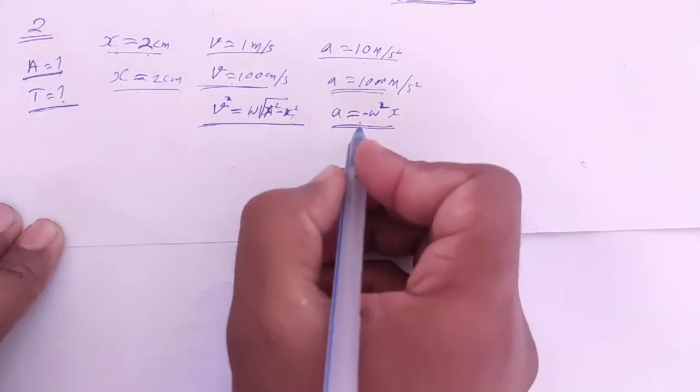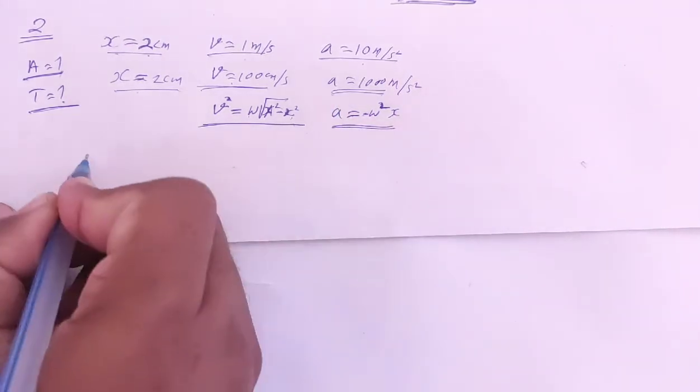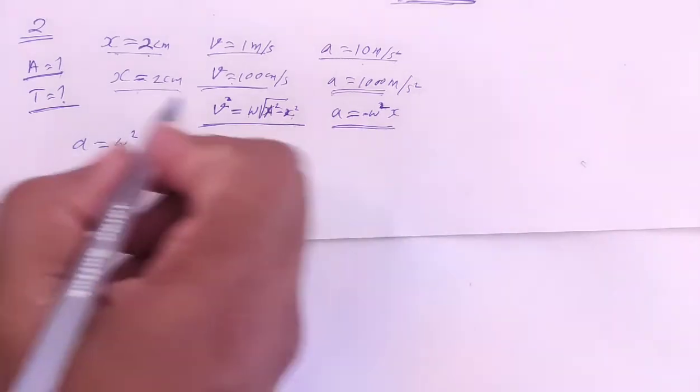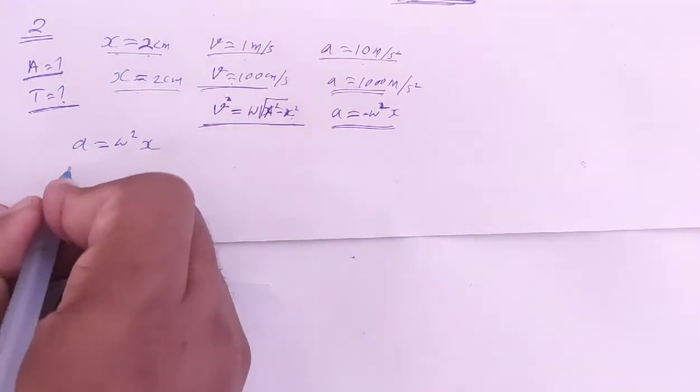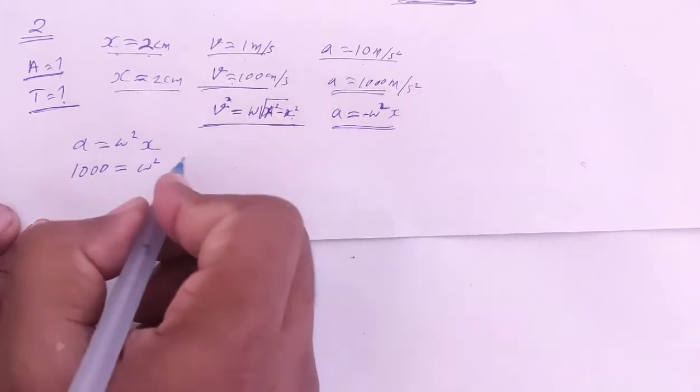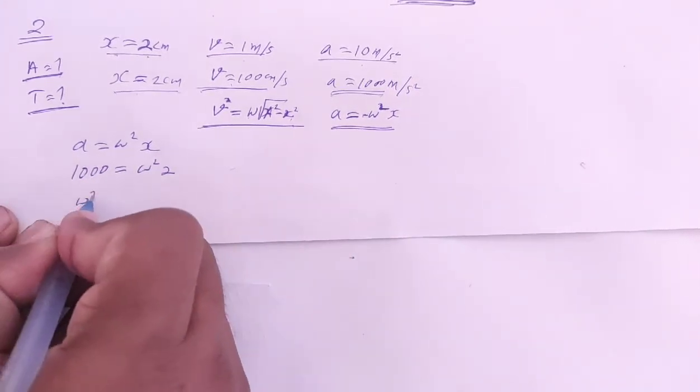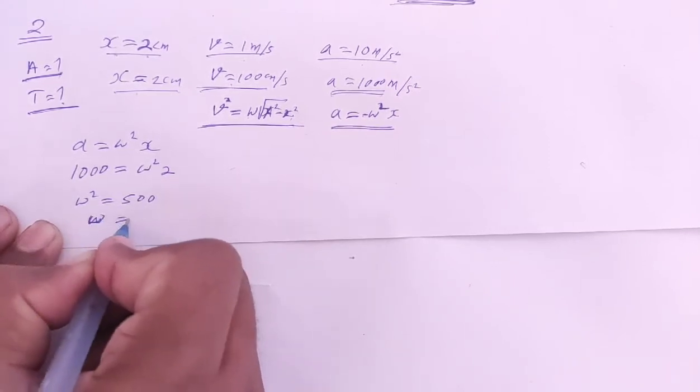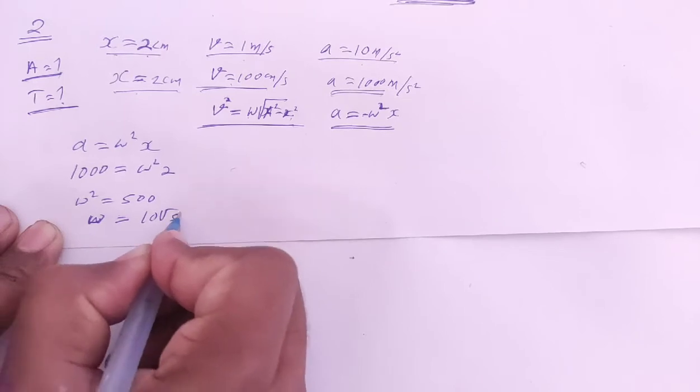We have magnitudes, so acceleration equals ω²x. Put the values: acceleration is 1000, x is 2, so ω² equals 500. Therefore ω is 10√5.